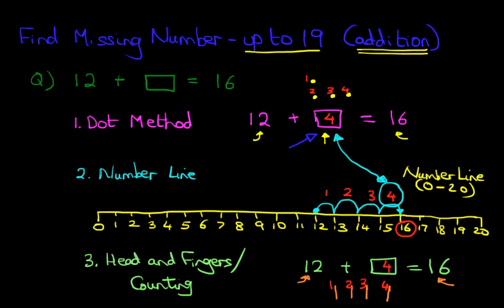We've got four using the dot method. For the number line, we also had four as the answer. And for the head and fingers method, we also had four. So three different methods, same result. You can use any method you wish. So that is how we find the missing number with numbers up to 19 for addition. Thank you. See you next time. Bye.